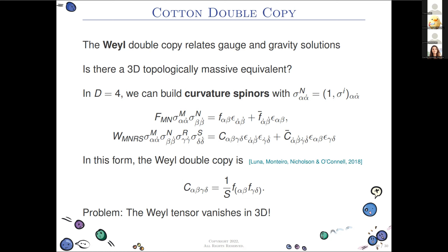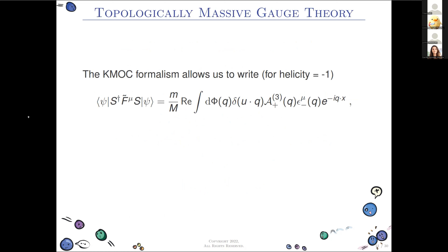The Weyl double copy in 4D was written down in 2018. The problem is the Weyl tensor is exactly zero in three dimensions, so we need to find the equivalent. We approach this from the amplitudes perspective: in three dimensions everything can be written as vectors using the dual field strength vector, hit with a sigma-alpha-beta in the SL(2,R) representation, defining a curvature spinor.